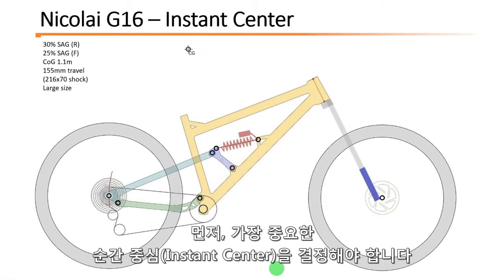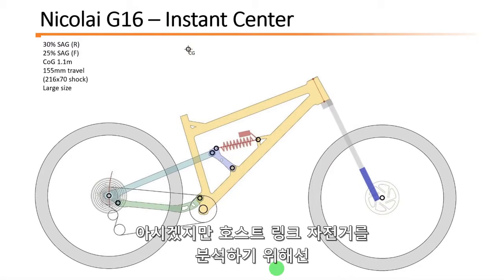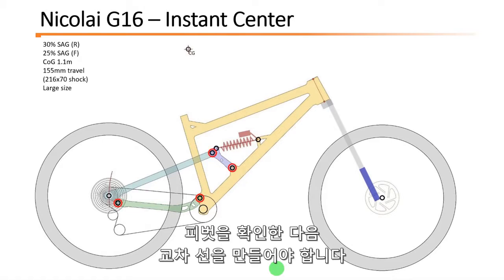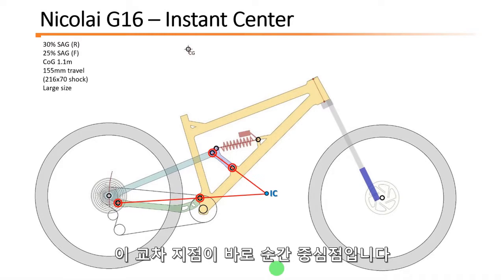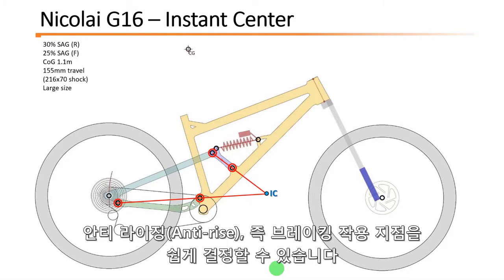First of all we have to determine the instant center, the magic point, also known as the virtual pivot. As you know on horselink bikes you need to see the pivots and then you make the crossing lines, and the intersection point is the instant center. Now that you have this magic point you can easily determine the anti-rise, the braking behavior.